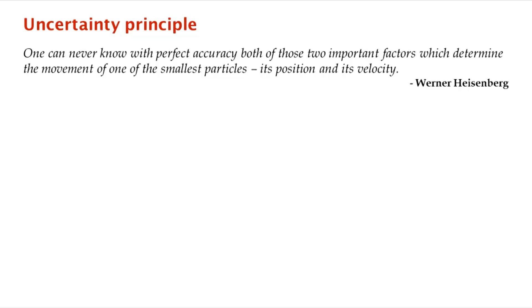Here's the way that Heisenberg formulated his uncertainty principle. He said we can never know with perfect accuracy both of those two important factors which determine the movement of one of the smallest particles: its position and its velocity.